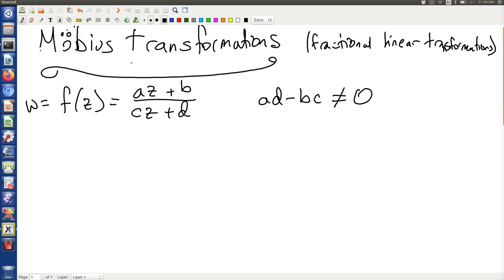You will notice this condition ad - bc not equal to zero looks a bit like a determinant. And indeed it is. Möbius transformations are very much like matrix equations, so there's a lot of structure here.